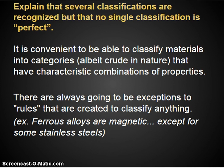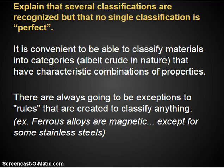Several classifications are recognized, but no single classification is perfect. It's easy to classify materials into categories, but those categories can be very crude in their definition, and there will always be some exceptions or errors. For example, ferrous alloys — alloys that contain iron — are generally all magnetic, except for some stainless steels that aren't magnetic. So there's almost always going to be exceptions to rules created to classify materials.